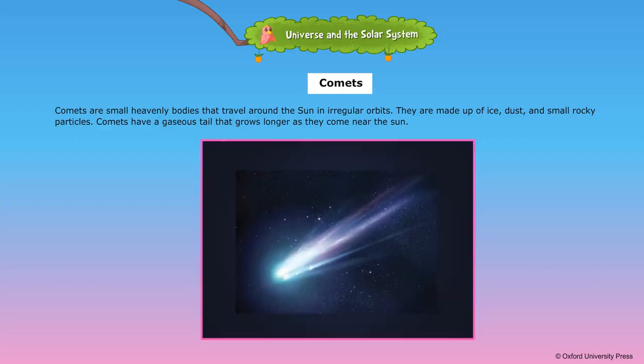Comets are small heavenly bodies that travel around the sun in irregular orbits. They are made up of ice, dust and small rocky particles. Comets have a gaseous tail that grows longer as they come near the sun.